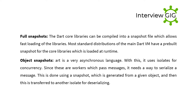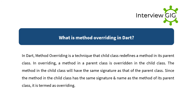What is method overriding in Dart? Method overriding is a technique where a child class redefines a method from its parent class. The method in the child class has the same signature and name as the method in the parent class. Since the child class method has the same signature and name as the parent class method, it is termed overriding.